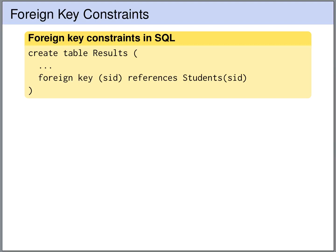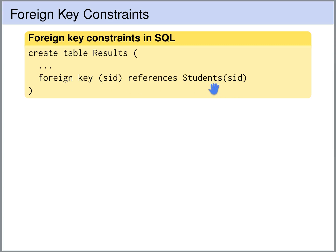In the CREATE TABLE statement in SQL, we can declare foreign key constraints. For example, here we are creating the table results and we declare that the SID of the table results references the column SID of the table students.